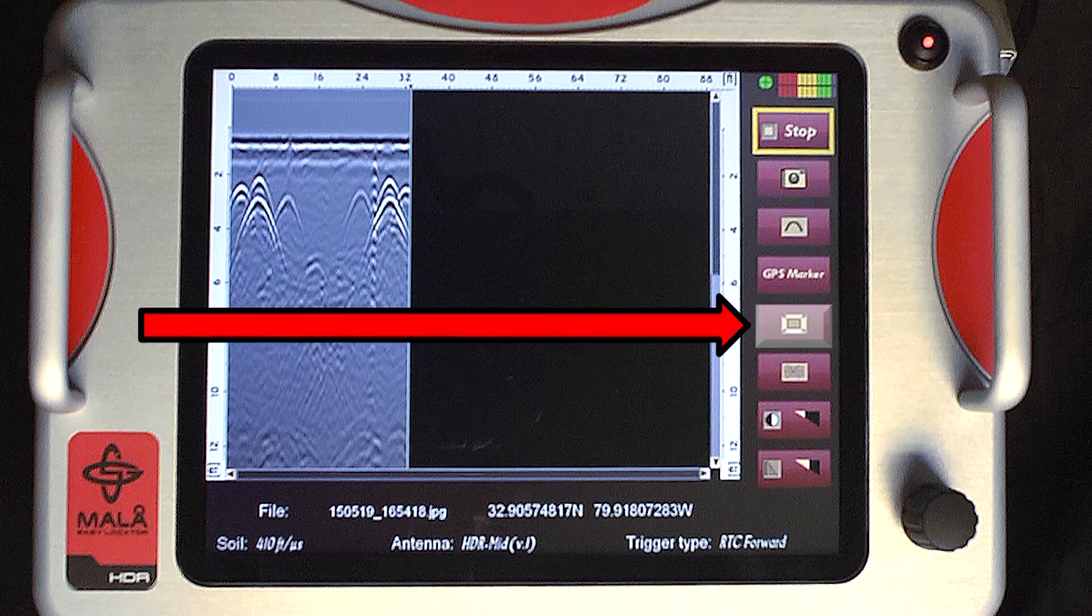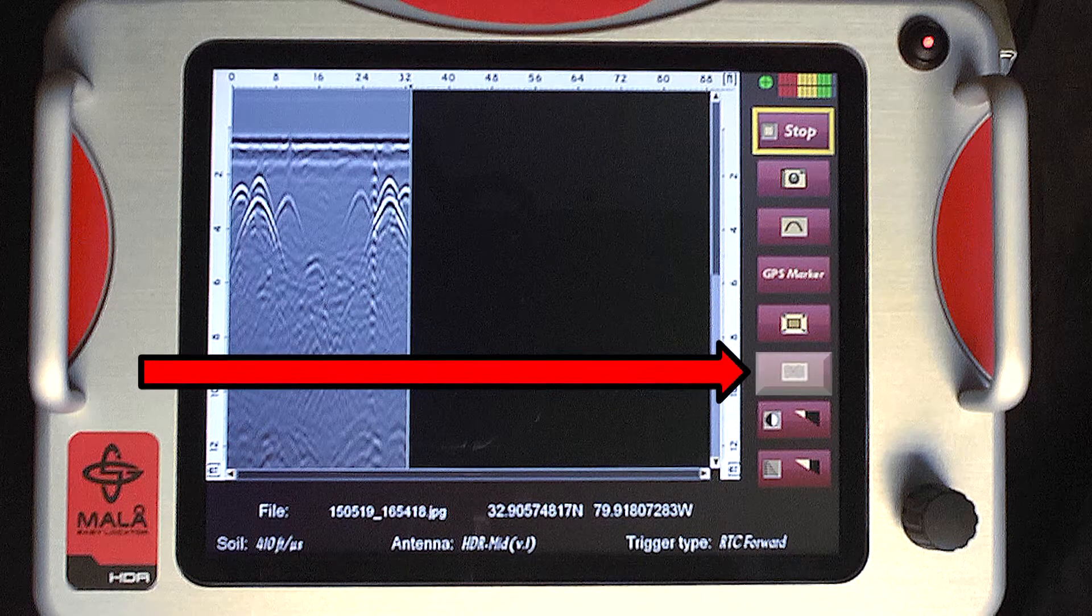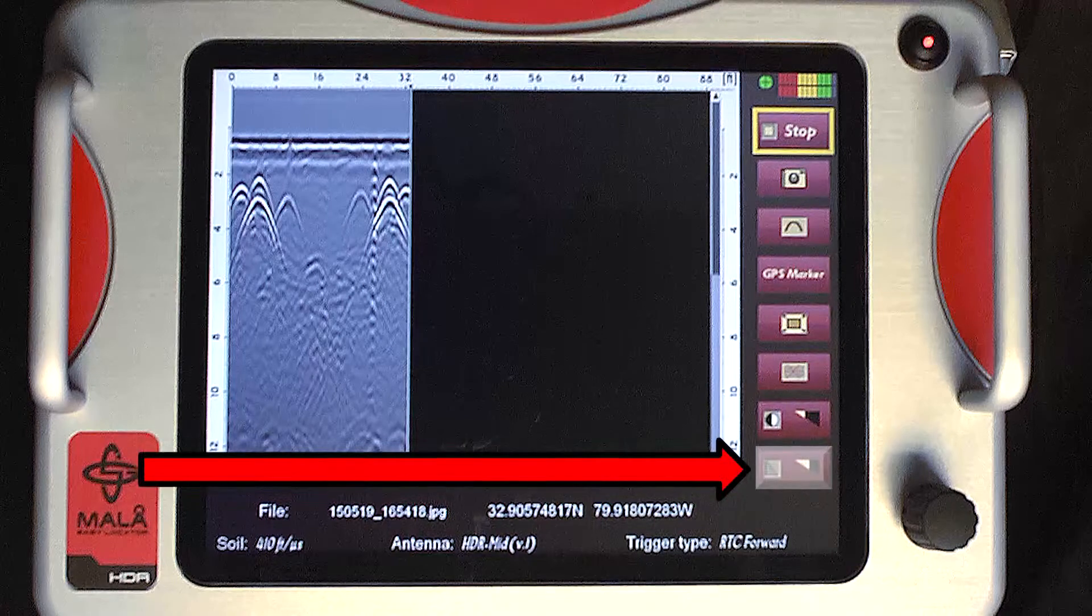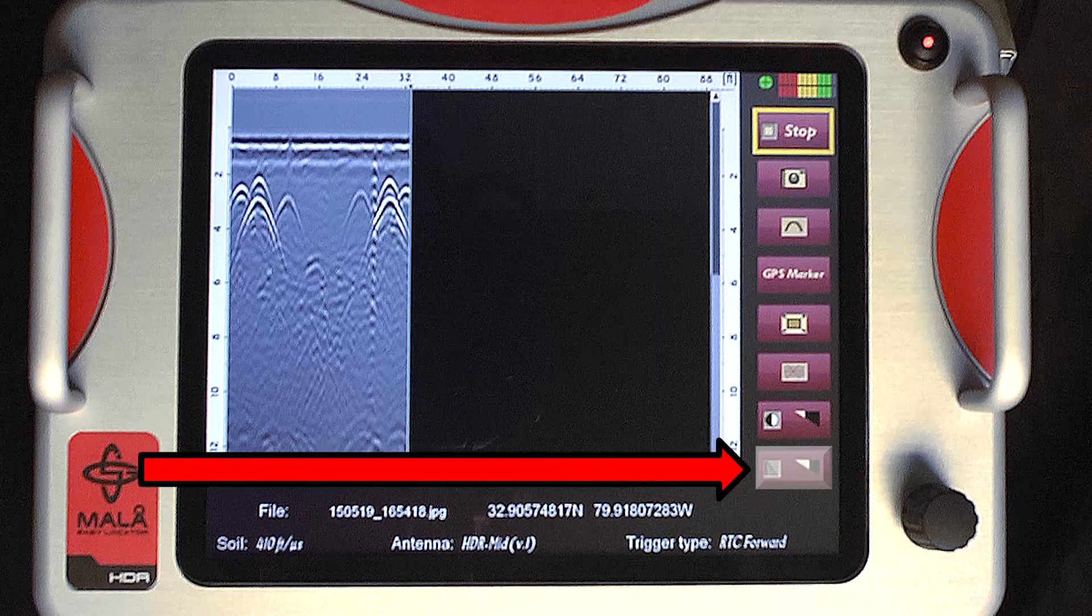Additional icons are: Full screen, Background removal, Contrast, and Time gain. If auto gain is selected, the time gain icon will not appear.